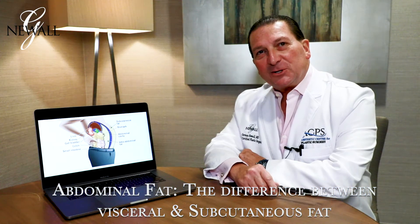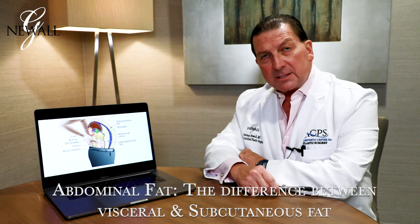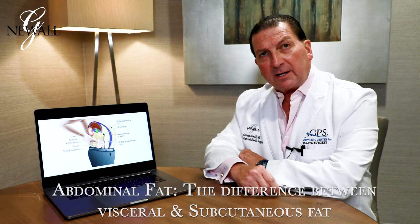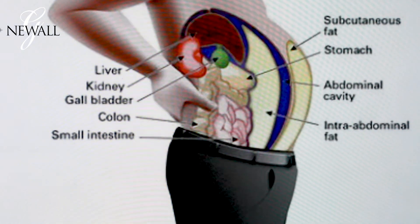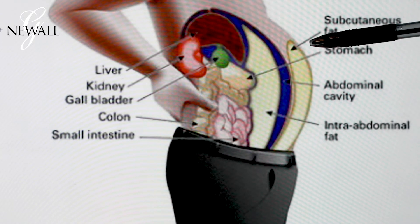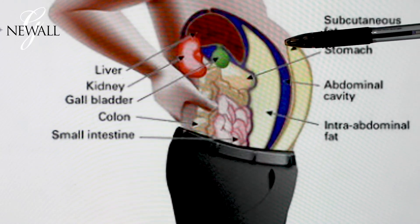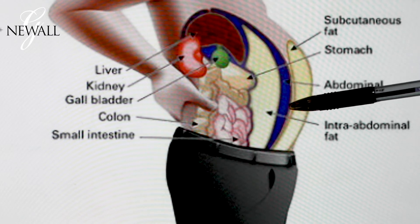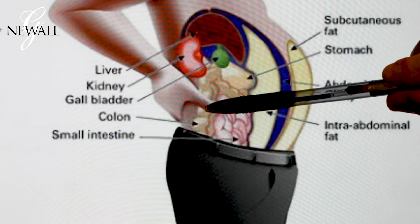Today we're going to talk about abdominal fullness and the difference between visceral fat and subcutaneous fat, and what we can do about it. This diagram shows a cross-section of the abdominal cavity. You can see here subcutaneous fat, the abdominal musculature, and visceral fat within the surrounding organs.